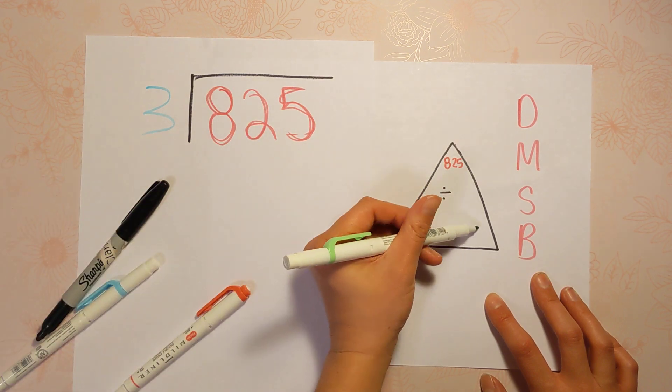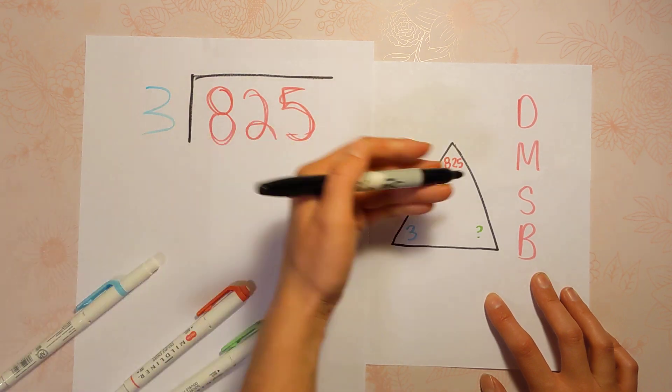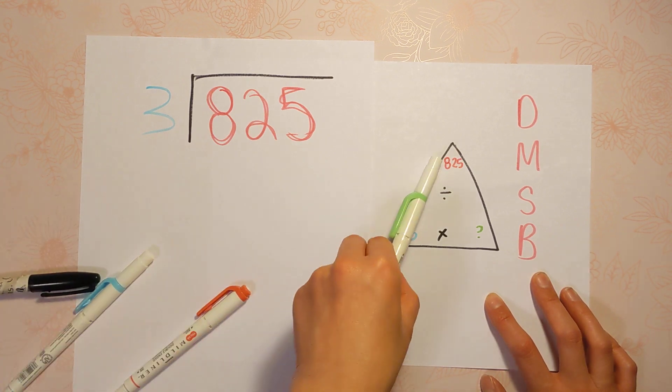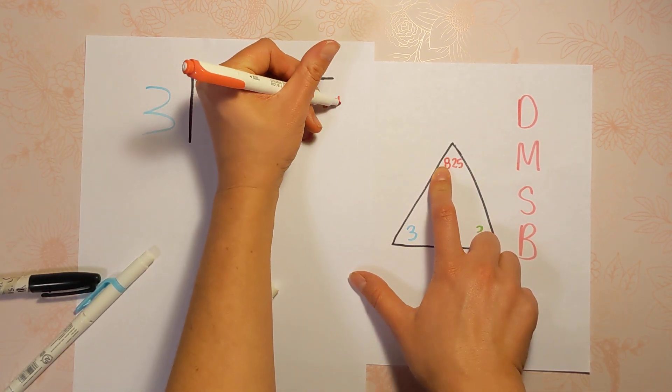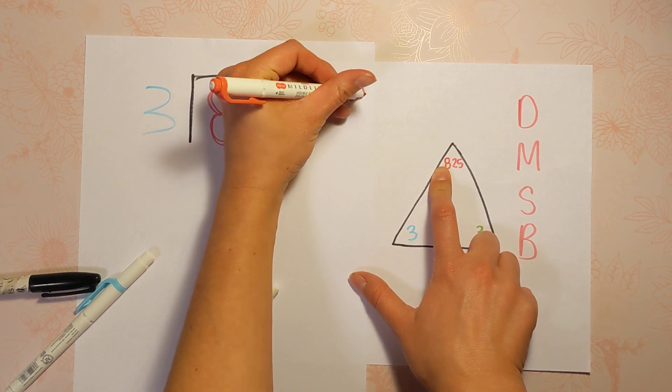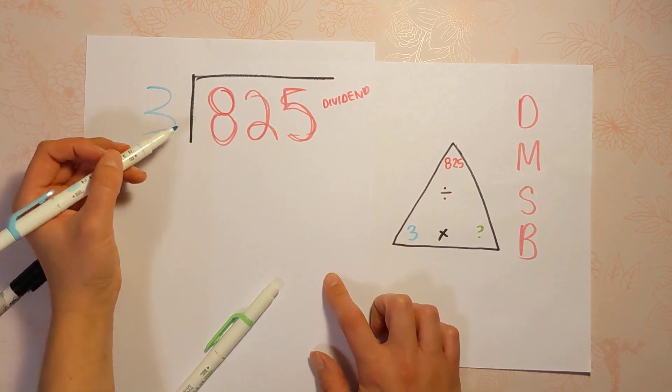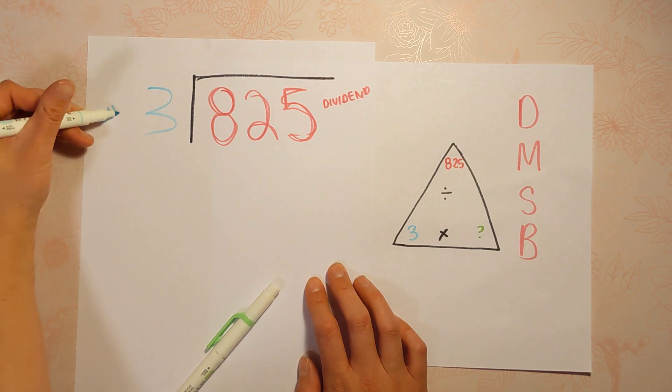This up here, the number that's getting divided up, is called the dividend. It's a fancy word for the number that's getting divided up. The number we're dividing it by is called the divisor.